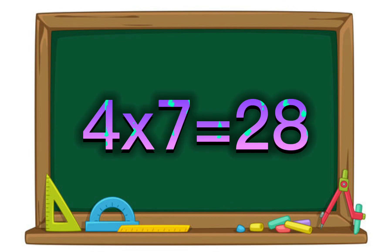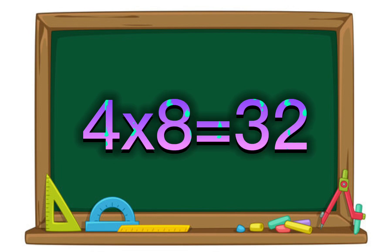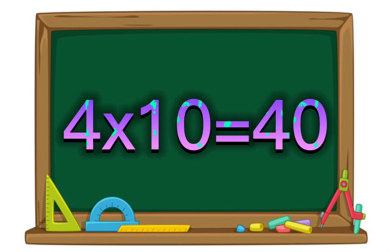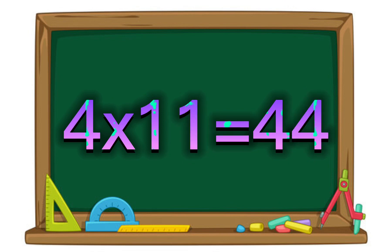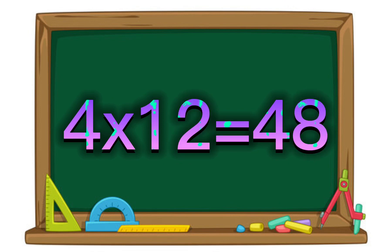4 times 7 equals 28. 4 times 8 equals 32. 4 times 9 equals 36. 4 times 10 equals 40. 4 times 11 equals 44. 4 times 12 equals 48.